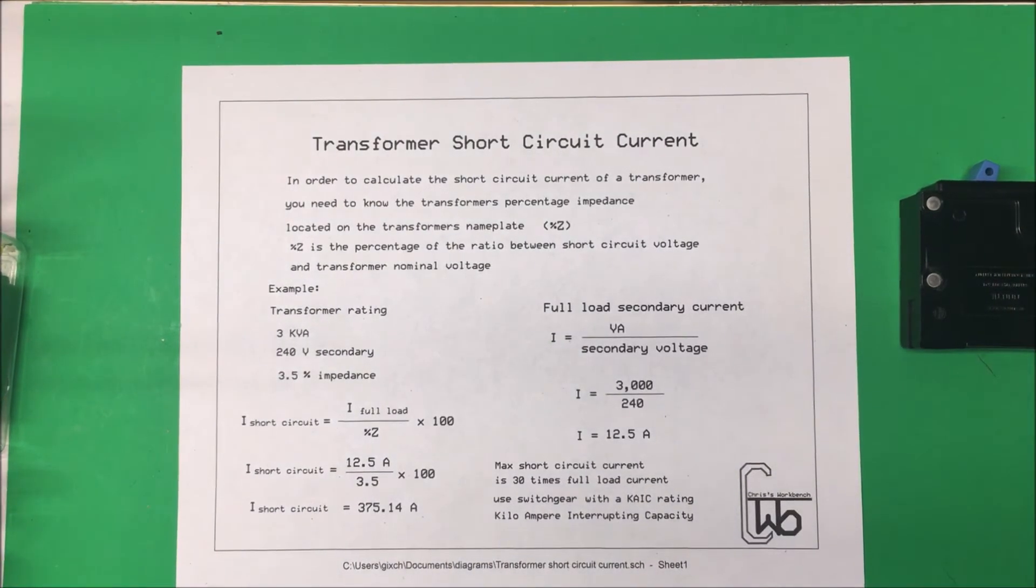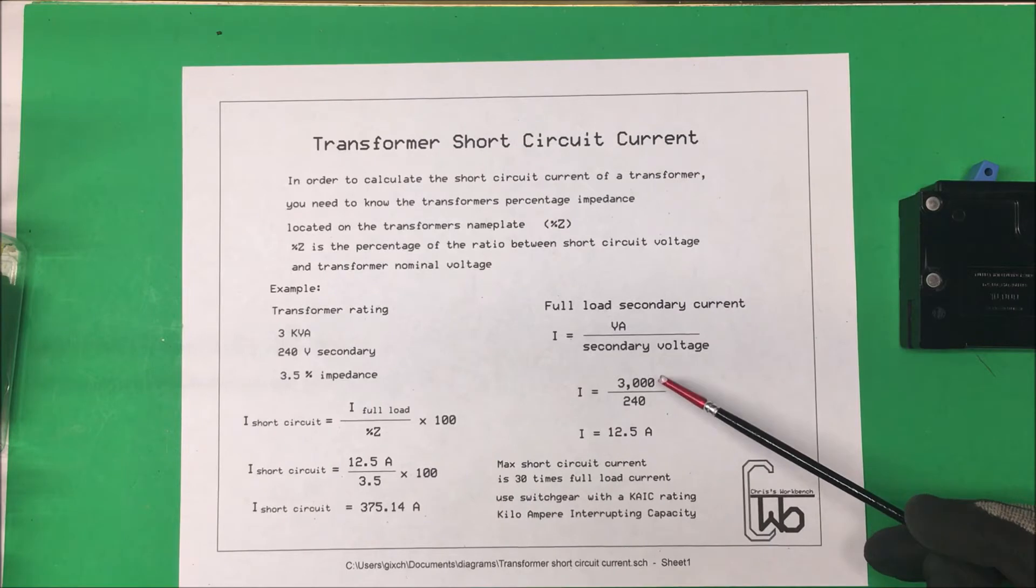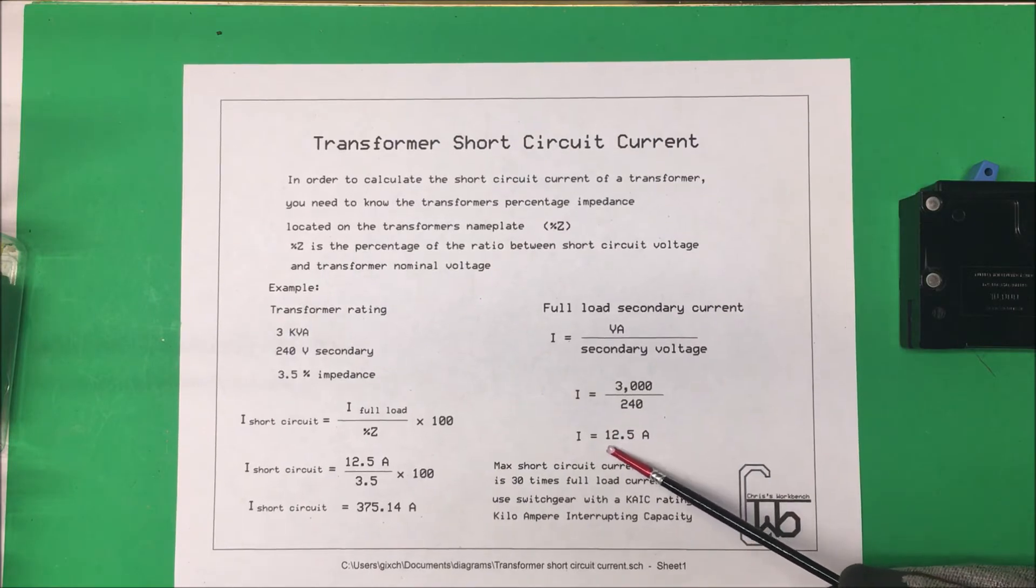To calculate our full load current, we just take our secondary voltage, which is our 240 volts, and we divide that into our VA, which is 3000, so it turns out to be 12.5 amps. So this transformer is good for 12.5 amps on the secondary.